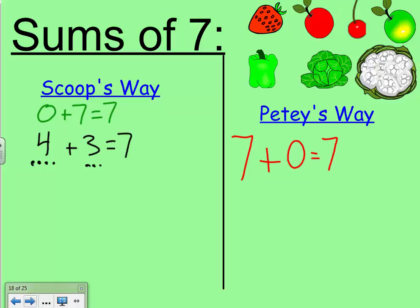Petey, how do you see it? Petey sees 5 pieces of food with stems plus 2 without stems. 5 plus 2 equals 7.